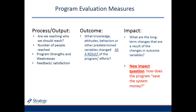You also have to think about whether your evaluation measures are process and output, outcome, or impact. Process and output asks: are we reaching who we reach? The number of people, programs, strengths and weaknesses, feedback and satisfaction are all output measures. Outcome measures are the knowledge, attitudes, behaviors, or other changes to variables that happen as a result of the program — for example, if we're doing a teen pregnancy program and one of the outcomes we want is to decrease re-birth rates.